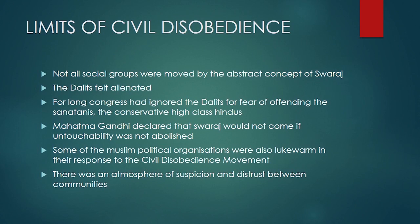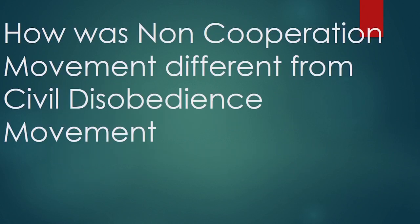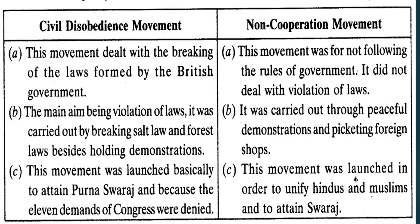Not all social groups were moved by the abstract concept of Swaraj. The Dalits felt alienated from Congress because Congress had largely ignored their demands, fearing that conservative high-caste Hindus would be displeased. However, Mahatma Gandhi declared that Swaraj was not possible until untouchability was abolished. Muslim political organizations were also not very active in the Civil Disobedience Movement due to significant suspicion between communities. How is the Non-Cooperation Movement different from the Civil Disobedience Movement? This is another important question.